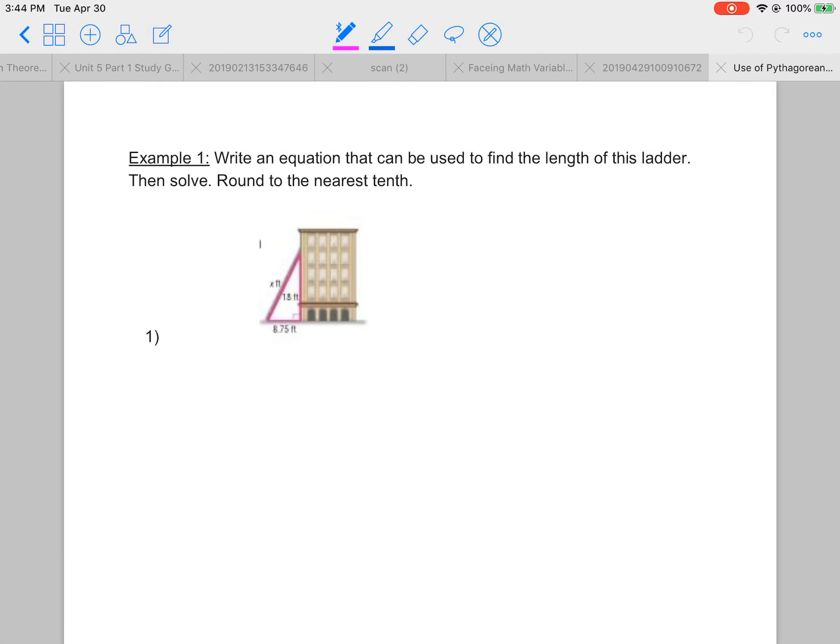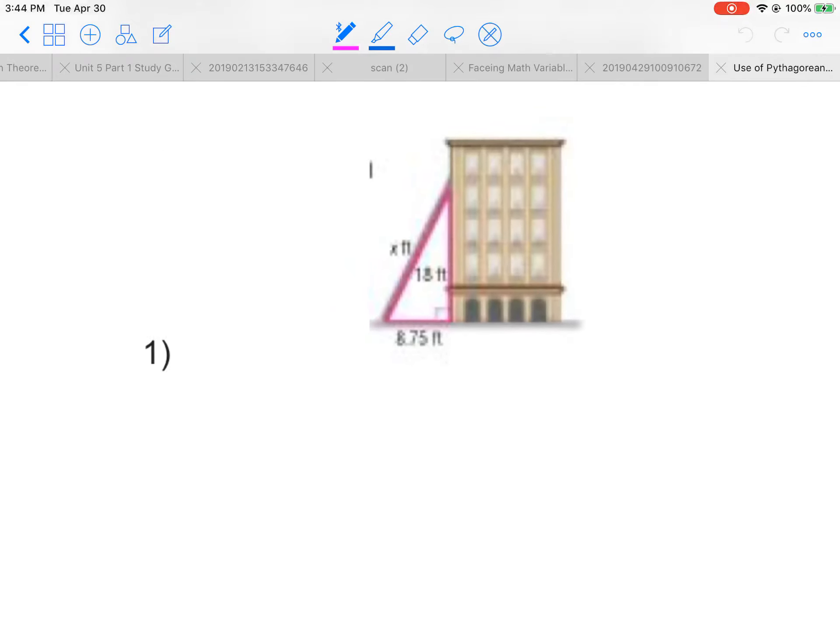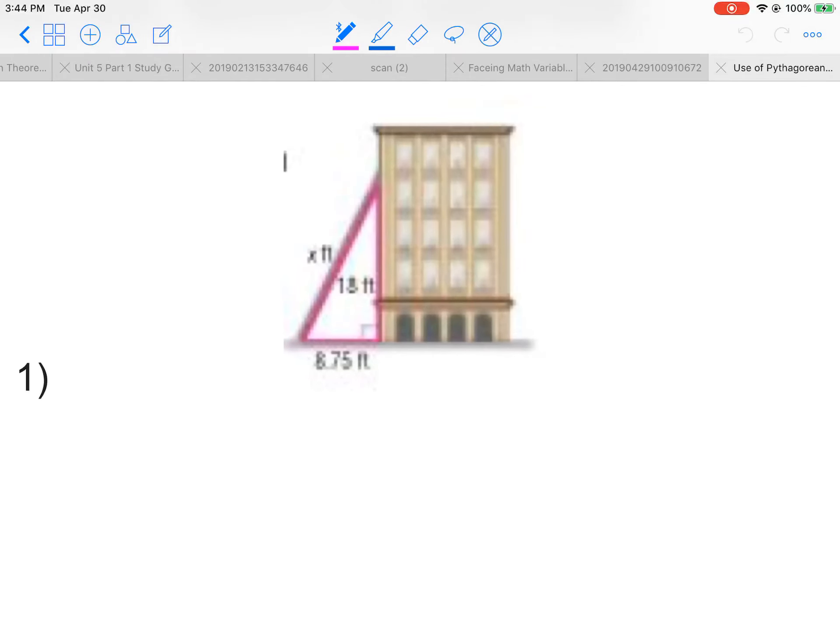Example one: write an equation that can be used to find the length of this ladder, then solve, round to the nearest tenth. So you can see that our right angle is right here, so this is our hypotenuse, we'll call that x. This looks like it is an 18, and this is an 8.75.